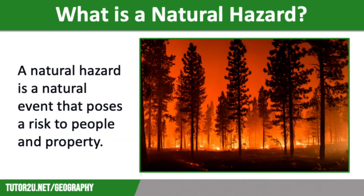A natural hazard is a natural event that poses a risk to people and property, so there has to be an element of human involvement. For example, a volcanic eruption that doesn't affect people is just a natural phenomenon rather than a natural hazard. The term hazard implies risk, and if no one is there, then no one is at risk.